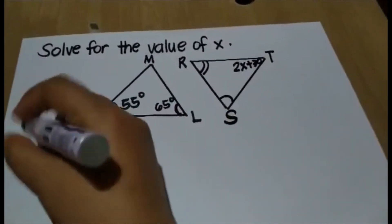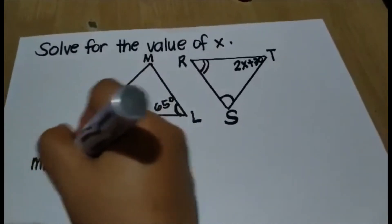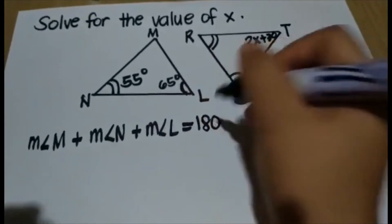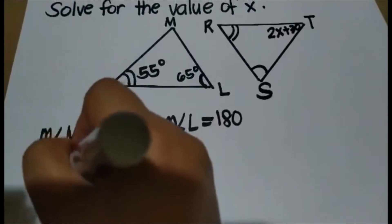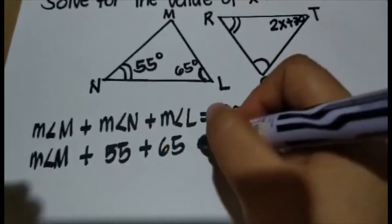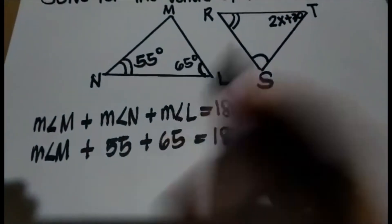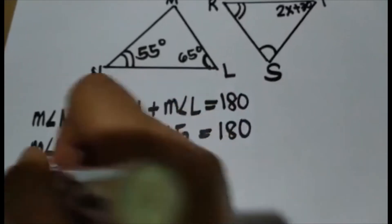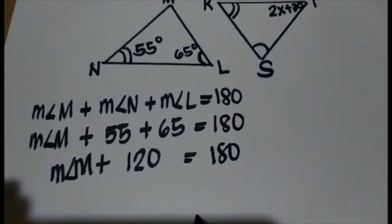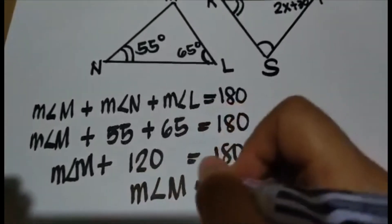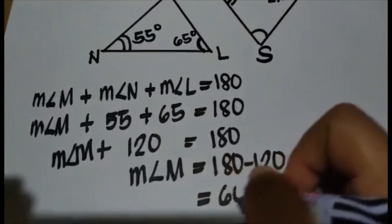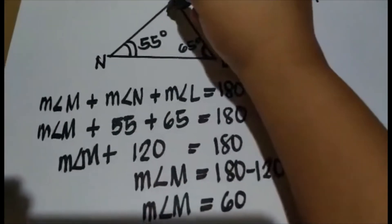We can say that measure angle M plus measure angle N plus measure angle L equals 180. Substituting: measure angle M plus 55 plus 65 equals 180. Combining 55 and 65 gives us 120, so measure angle M plus 120 equals 180. By the subtraction property of equality, measure angle M equals 180 minus 120, which is 60. Therefore, measure angle M is 60 degrees.